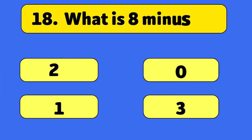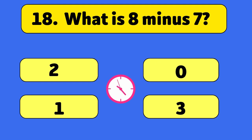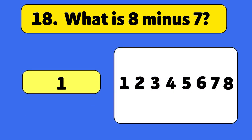What is eight minus seven? One. Start with eight and take away seven, and we're left with one.